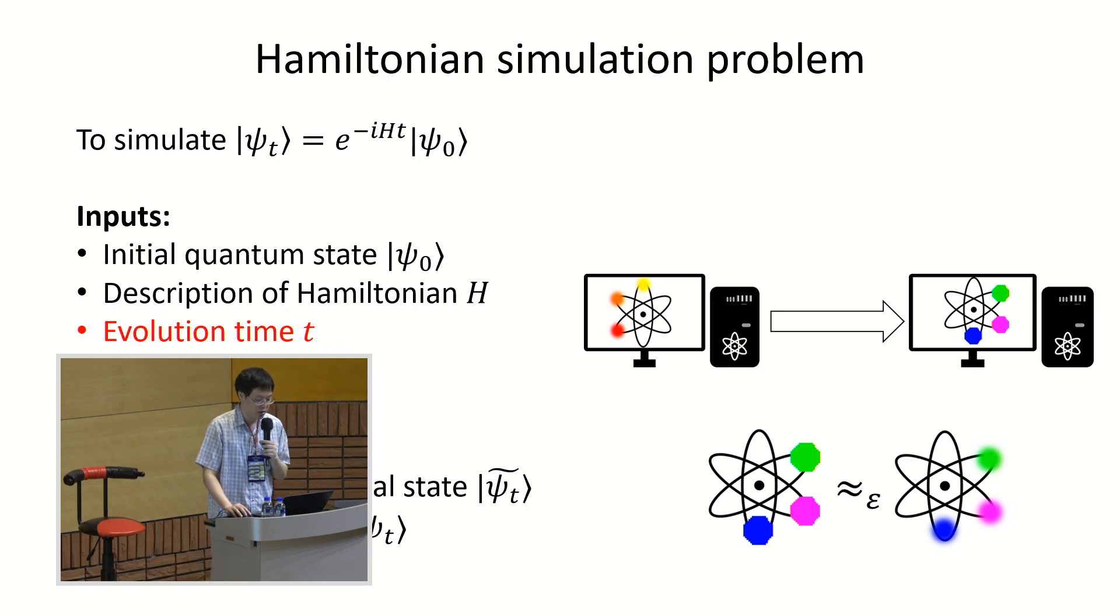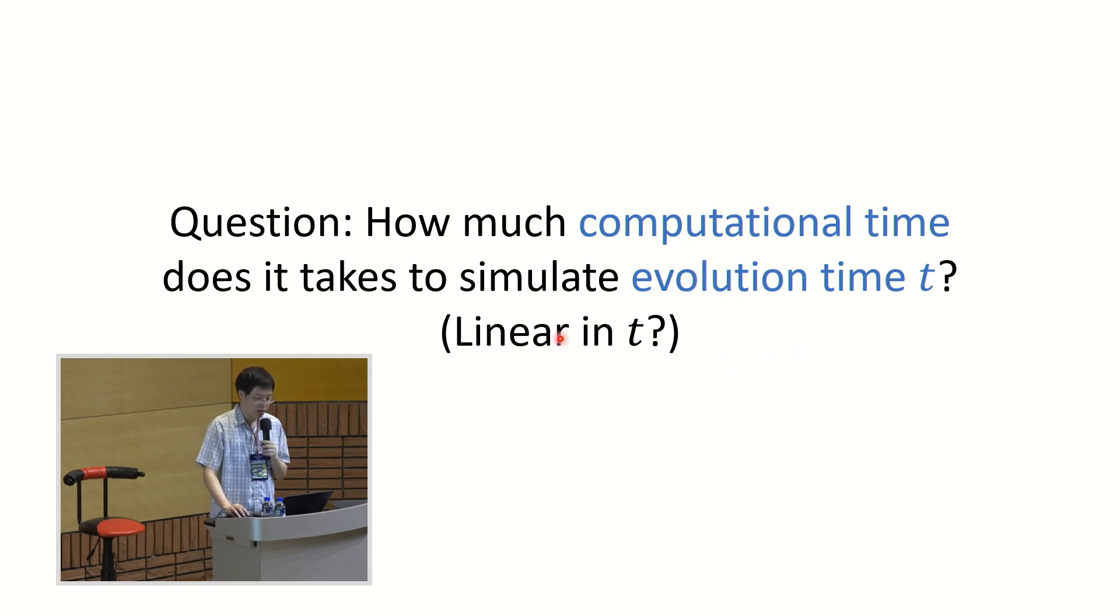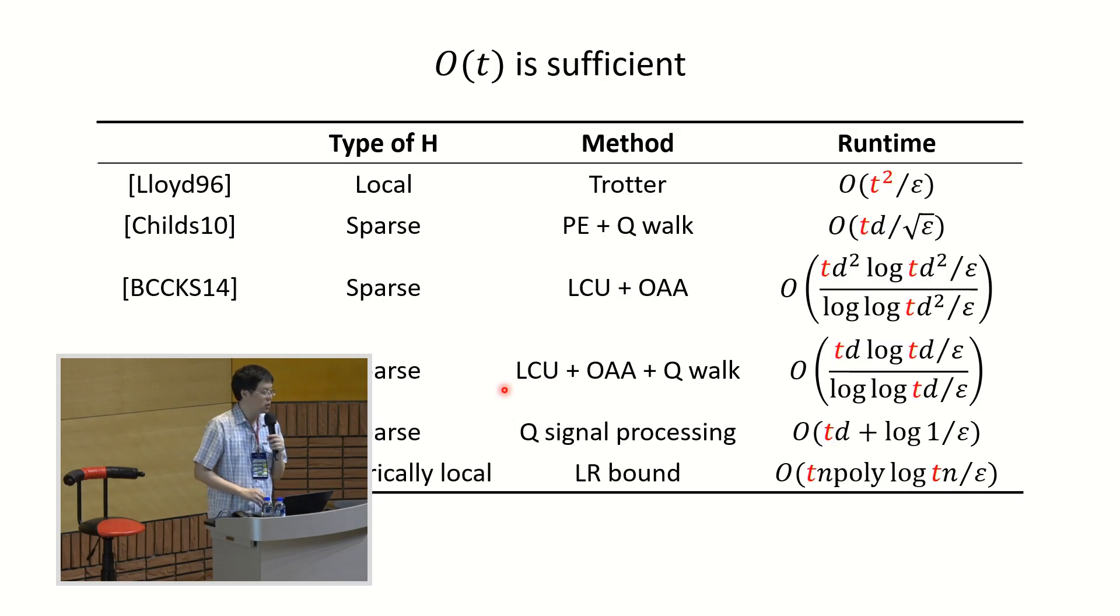That's a little digression on the precision, but back to the actual question. The question of the series now is that we want to think about the evolution time. So how does our computation scale with the evolution time? If we want to evolve time T, then how much computational time does it take? Is it linear in T as in nature?